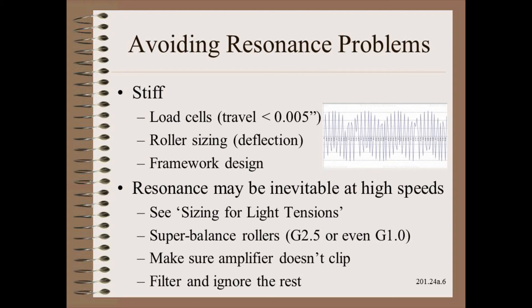Next, we use all of our best practices to size for light tensions as described earlier. Whether you reach resonance or not, balancing to G2.5 or even super-balancing to G1.0 is a cost-effective way to reduce vibration. The electrical engineer has two final tasks: first, to make sure that none of the amplifiers ever clip during vibration or especially during resonance, otherwise the mean or average will be shifted. Finally, they should filter and just try to ignore the rest, as the driver will usually just ignore the high frequency component as well.